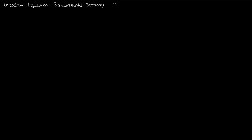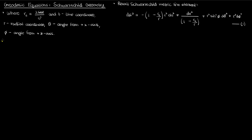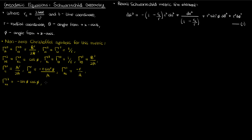Let's recall a few facts from our previous videos beginning with the Schwarzschild metric. The line element for a spherically symmetric space-time geometry is equation 1. R sub s is the Schwarzschild radius. The metric tensor has a bunch of nonzero second kind Christoffel symbols. The functions a and b are exclusively functions of r — they are just the rr and tt components of the Schwarzschild metric, written as a and b for ease of notation.